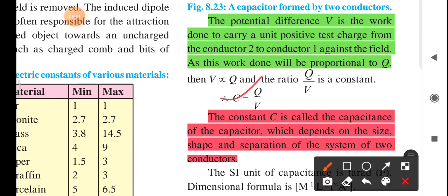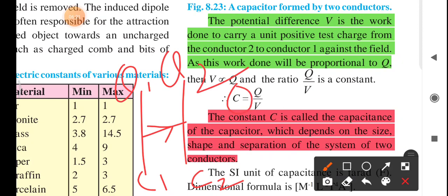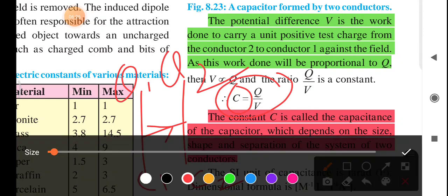The constant C is called as the capacitance of the capacitor, which is dependent on the size, shape, and separation of the system between two conductors. There are two conductors and capacitors are separated by some distance. C is the capacitance which is proportional to the potential difference.